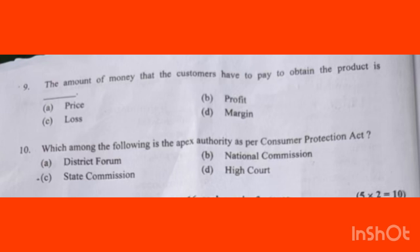Which among the following is the Apex Authority as per the Consumer Protection Act? Options include High Court and Supreme Court, but the correct answer here is the National Commission. In the Consumer Protection Act, District Forum, State Commission, and then National Commission — High Court is not part of this. The Apex Authority is the National Commission. Option B is the right answer.